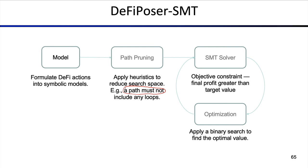We input all this into an SMT solver with an objective constraint that the final profit is greater than a target value — for example, one Ether. We can also perform optimization through binary search to find the optimal value. The SMT solver tells us whether there's a solution given that particular target value. If there's no solution, we can decrease the target — for example to 0.5 Ether — until we find a close-to-optimal value.